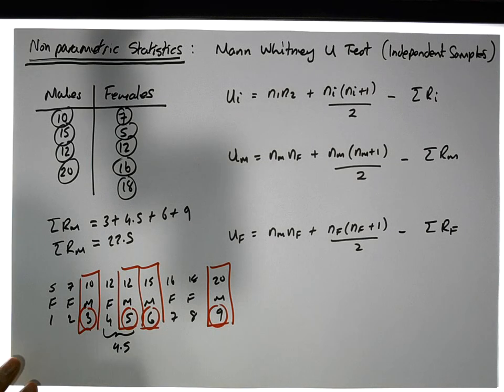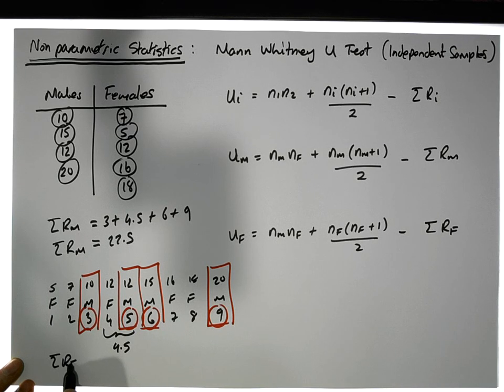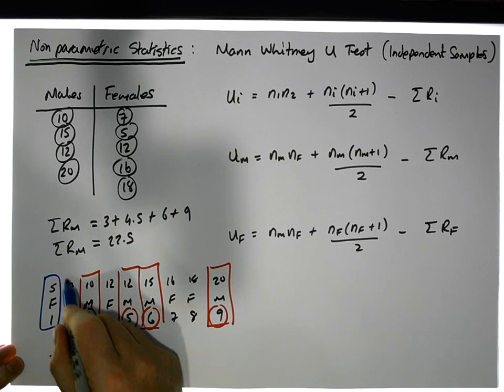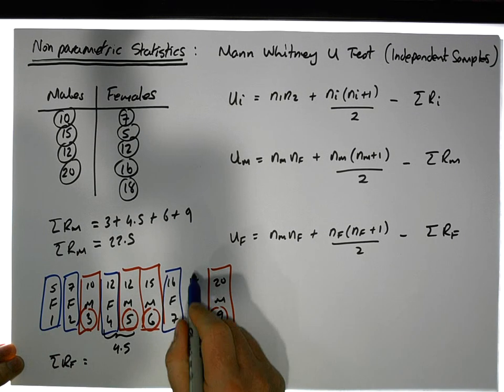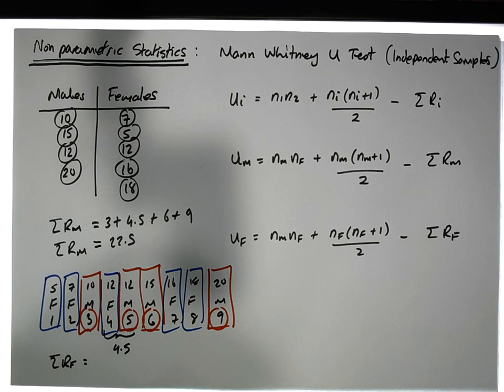What about the females? I'll just do that down here. I'm sort of running out of paper here. So let's say for the females, we have the sum of the ranks of the females is equal to, well, the females are here, here, here, here, and here. So the ranks that have been assigned to them are one...